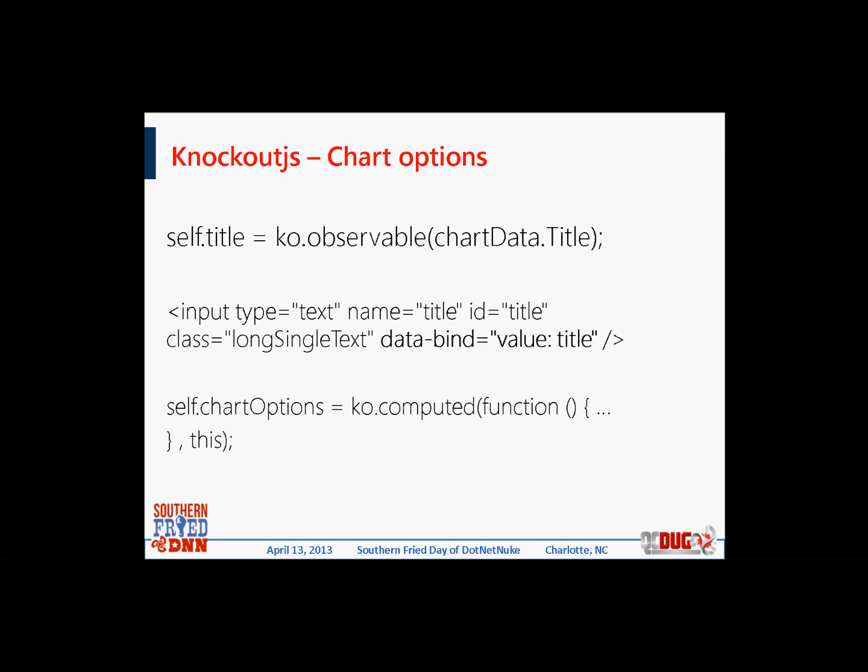In addition to observable attributes — which let you find out when something's been changed and also notify an element when data has changed — you can create custom functions. I created an attribute that calls a computed function to get the chart options. Anytime any of my chart options change from the observable attributes above, the computed function runs. It assembles the chart options object that my jQuery chart component understands, so anytime any option is changed it recomputes that array of all chart options, making it ready to pass to the chart component.